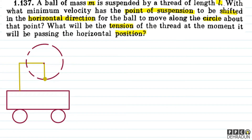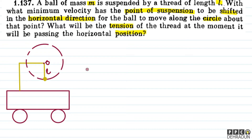So let's see the setup. We have a ball which is suspended by a thread, and the point of suspension is O. The length of the thread is L. The point of suspension O is moved in the horizontal direction so that the ball will undergo circular motion.